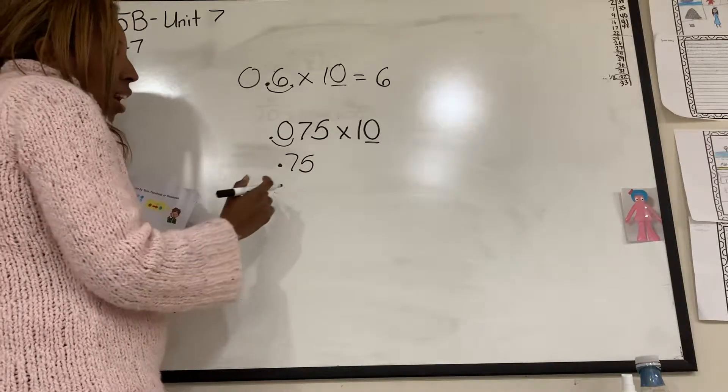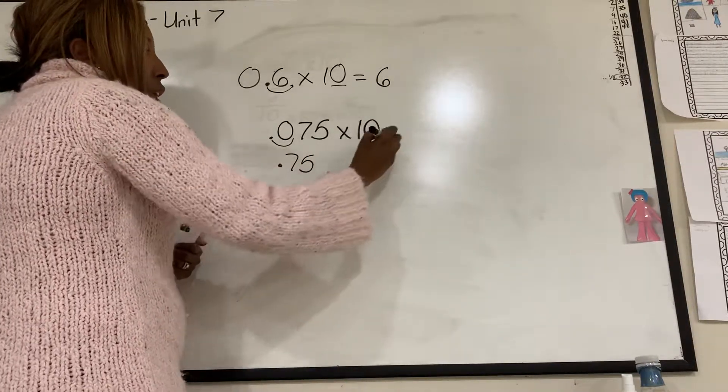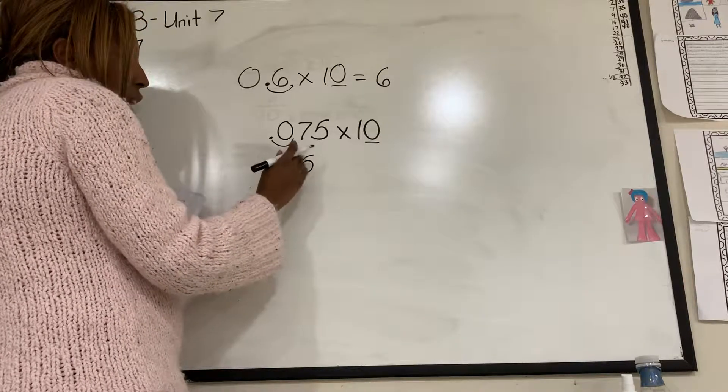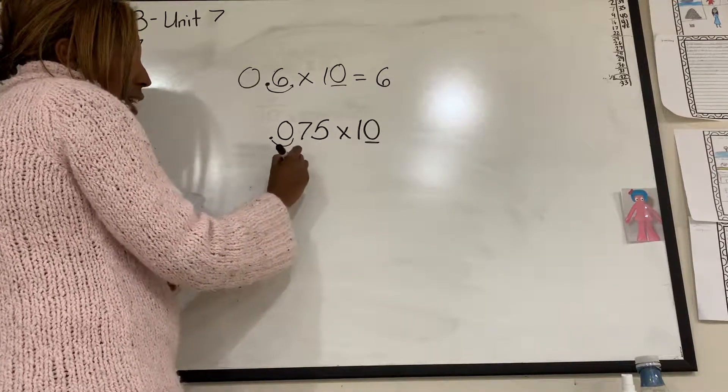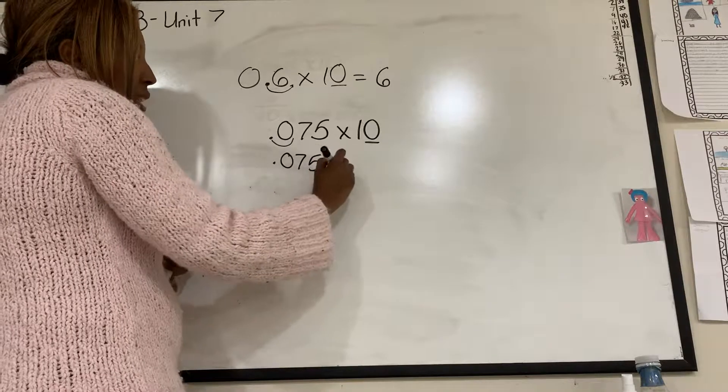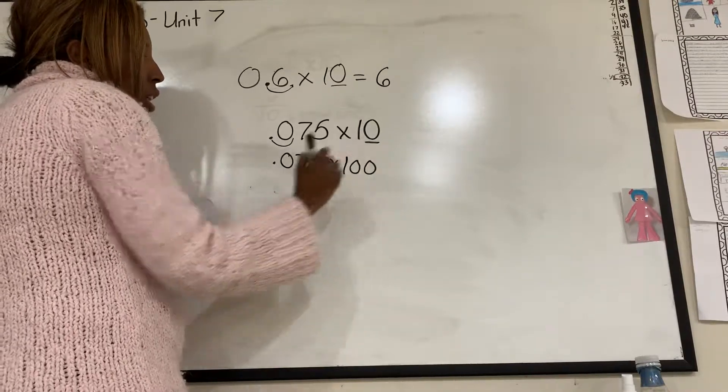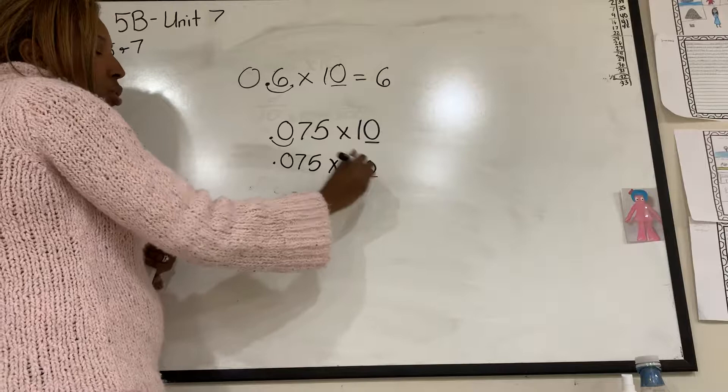Now, if I on the other hand had 0.75, try this again, times let's say 100. Now I have one, two zeros. And you only count the zeros with the ten hundred thousand. You don't count any other zeros.